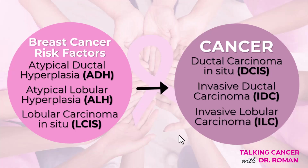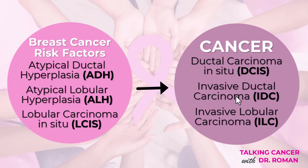There are three entities that are risk factors for the development of possible breast cancer in the future: atypical ductal hyperplasia, atypical lobular hyperplasia, and lobular carcinoma in situ. All of these are risk factors for breast cancer and sometimes they can become breast cancer. The actual breast cancers are called ductal carcinoma in situ, invasive ductal carcinoma, or invasive lobular carcinoma.